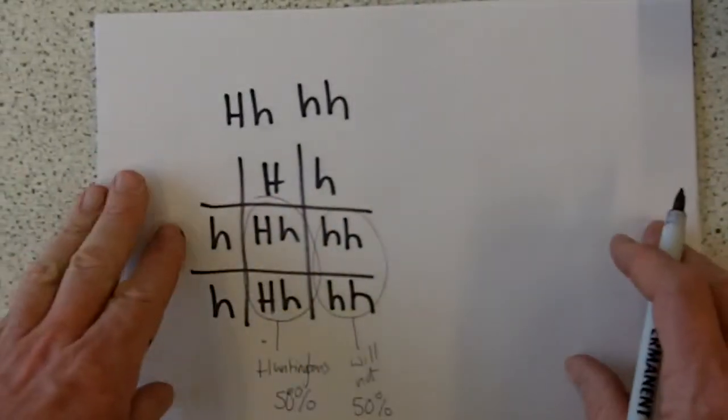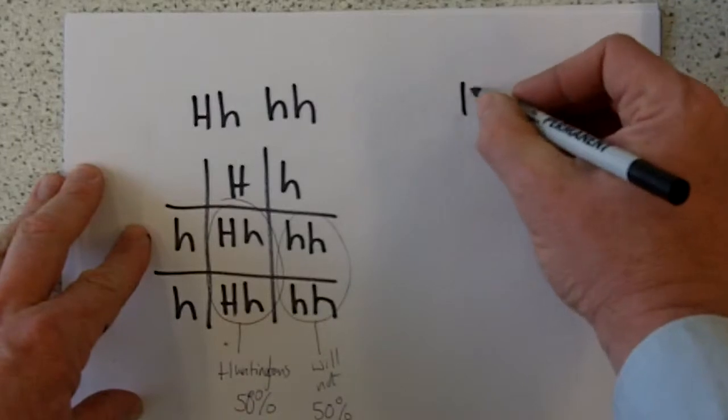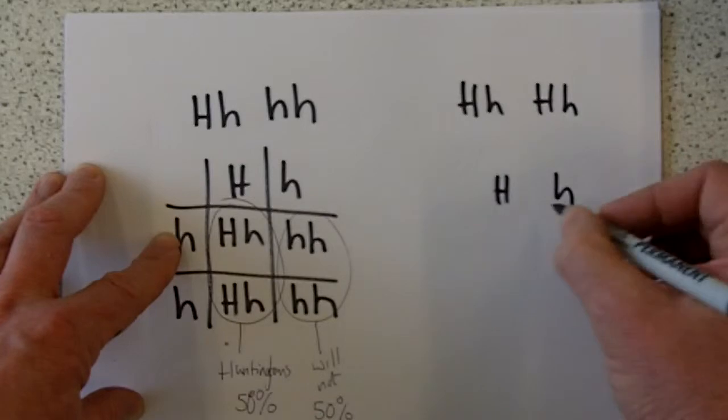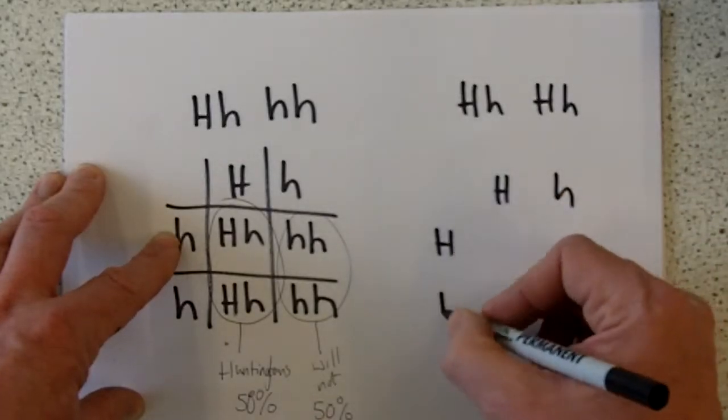So in the second scenario, which was big H, little h, big H, little h. Again, the same process.